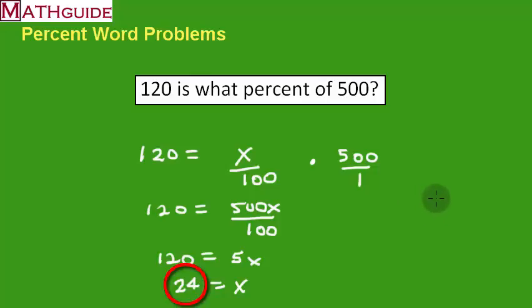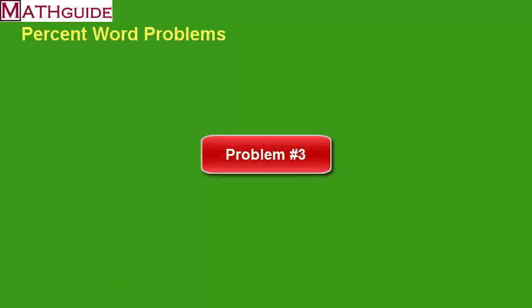Sometimes we're given discounts in stores. If it was a $500 item and they take off $120, you're wondering, what sale was that? It turns out that this was a 24% sale. Great way to check sale prices. Moving on, let's get to our third problem.